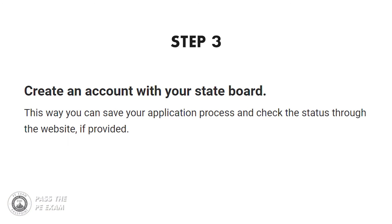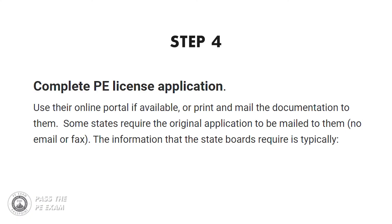Step three: create an account with your state board. Creating an account with your state board is an option in some states. Doing this, if an option, will allow you to save your application process and check the status through their website, making the process easier. Step four: complete your PE license application. Use your state's online portal if available, or print and mail the documentation to them. Some states require the original application to be mailed to them, not by email or fax.